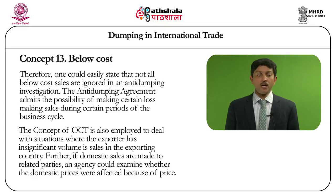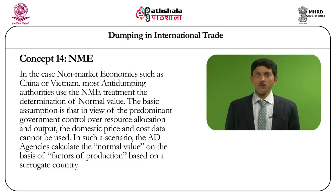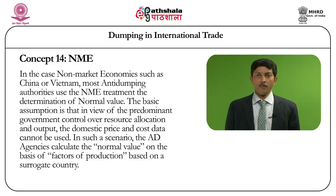The concept of ordinary course of trade is also employed to deal with situations where the exporter has an insignificant volume of sales in the exporting country. If domestic sales are made to related parties, the domestic investigating authority should examine whether the domestic prices were affected by the relationship between the two parties. In the case of non-market economies such as China or Vietnam, most anti-dumping authorities use the non-market economy methodology for the determination of normal value. The basic assumption is that in view of the predominant intervention or involvement of the government with respect to resource allocation and output, the domestic price and cost data in those countries may not be reliable, and if they are not reliable, they are actually ignored for the purpose of normal value calculation.